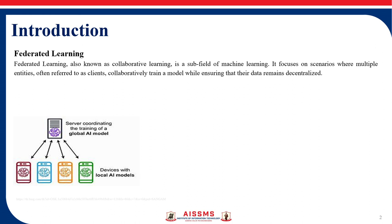To explain this concept, consider an example where a group of friends want to make the best lemon recipe. Instead of gathering in one place, each of us remains at their own home in their kitchen with their own ingredients. We are experimenting individually, and every day we share only our recipe improvements — not the actual lemons.